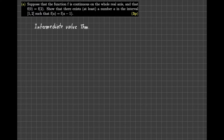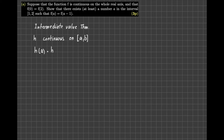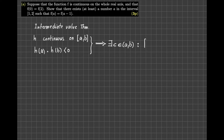Let me remind you about the content of this theorem. It asserts that if you have a function h that is continuous on the closed interval from a to b, and moreover if h at a multiplied by h at b is a negative number, then you can conclude the existence of at least a number c in the open interval from a to b such that h calculated at c is equal to 0.